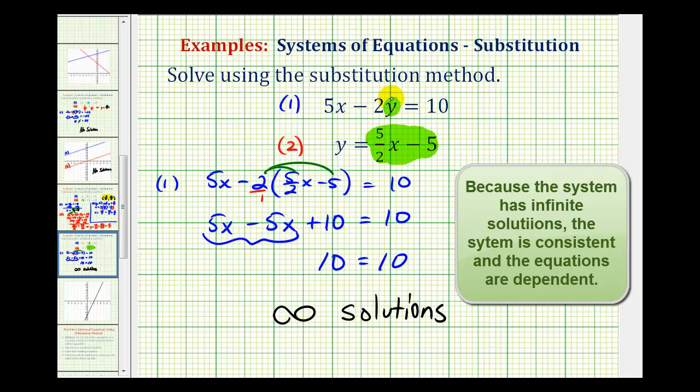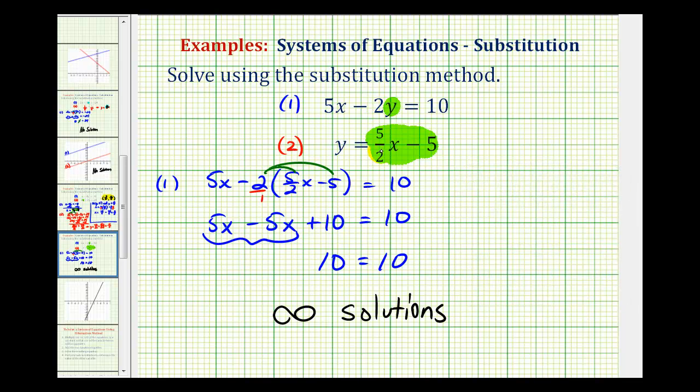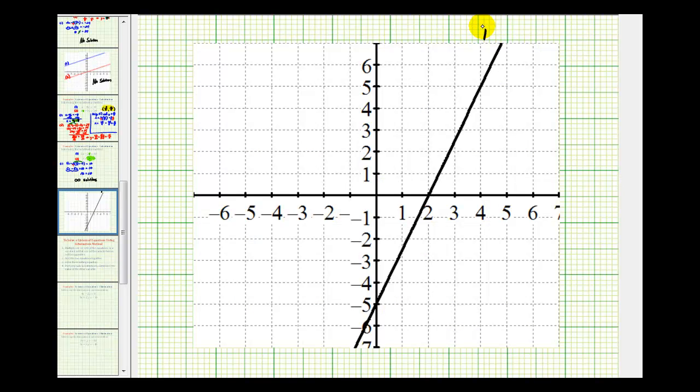If you remember when we were solving equations graphically, if a system had an infinite number of solutions, the two equations produced the same line. So let's go ahead and take a moment and look at the graph of these two equations. Well, equation one, and equation two, do produce the same line.